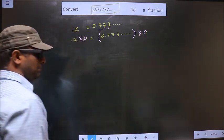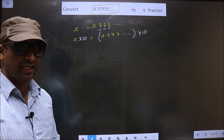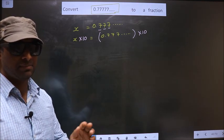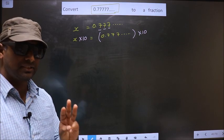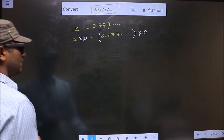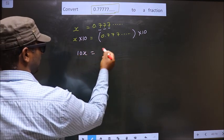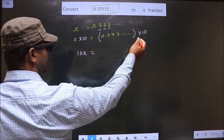I repeat: whenever one number is being repeated, multiply by 10. Had it been two numbers, multiply by 100. Had it been three numbers, multiply by 1000. So now here I get 10x equal to, when you multiply by 10, the decimal will shift one place to the right, making it 7.777 and so on.